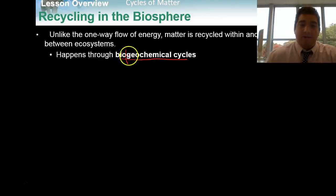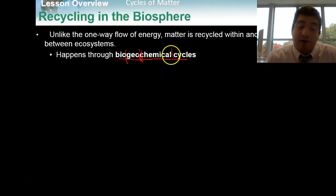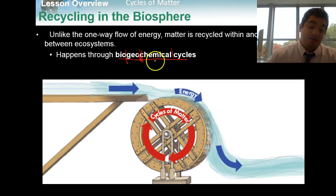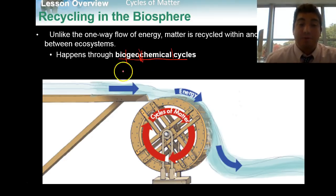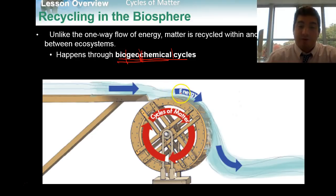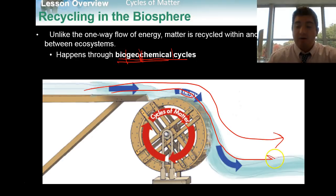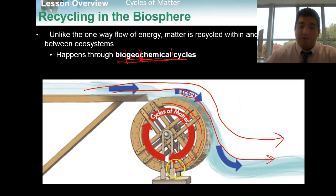This recycling happens through biogeochemical cycles — bio meaning life, geo referring to geology or processes through the earth, and chemical referring to chemical processes like atoms forming bonds. I like this picture because it's a good representation of the difference between energy and matter. Energy starts at the bottom of the food chain and eventually goes up and gets lost as heat, whereas matter is recycled. Looking at this water wheel: the energy is spinning the water wheel, but once the water goes down, it's not going to come back up and re-spin the wheel. Whereas the wheel, which represents matter, keeps going in a circle — the matter comes back down, comes back up, keeps going around.